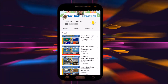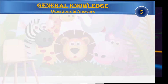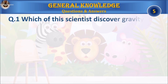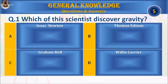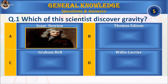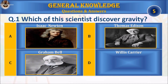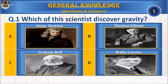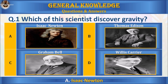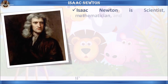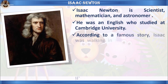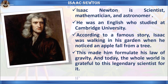Let's start with the first question. Which of these scientists discovered gravity? A. Isaac Newton, B. Thomas Edison, C. Graham Bell, or D. Willis Carrier? Your time starts. The answer is A. Isaac Newton.